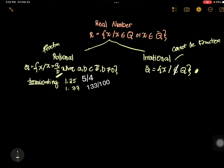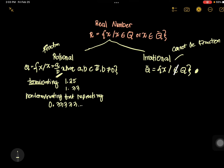What if you have non-terminating decimals? Non-terminating decimals that are repeating are still under rational because they can be expressed as fractions. For example, 0.33333 and so on — it does not terminate, but we can convert it into a fraction. 0.333 is 1/3. When a number terminates, or does not terminate but is repeating, meaning there is a pattern, it is rational.